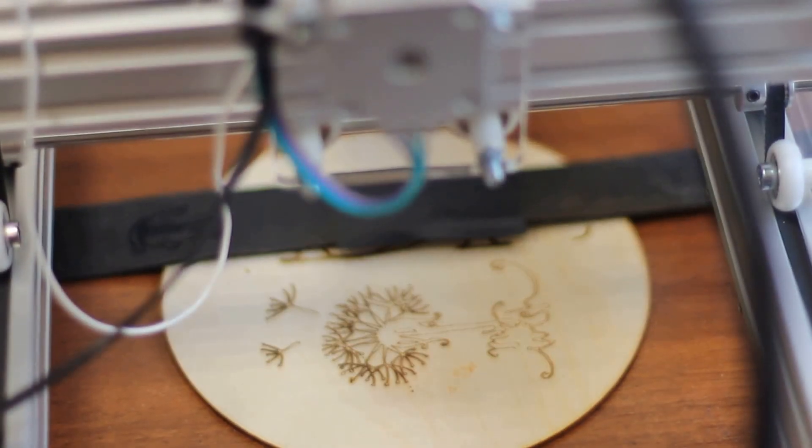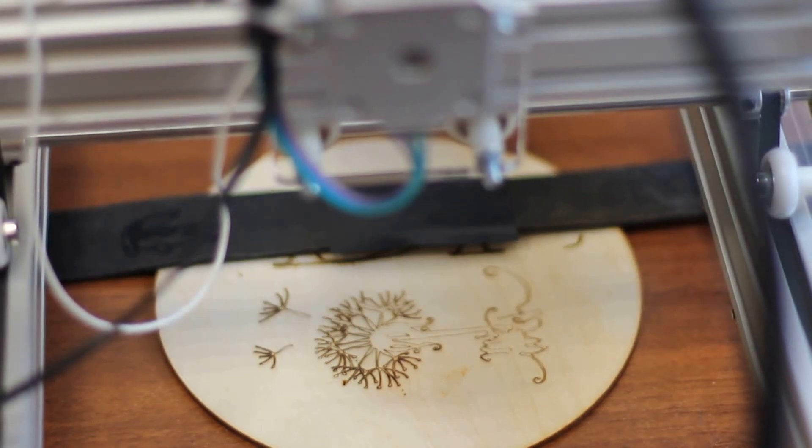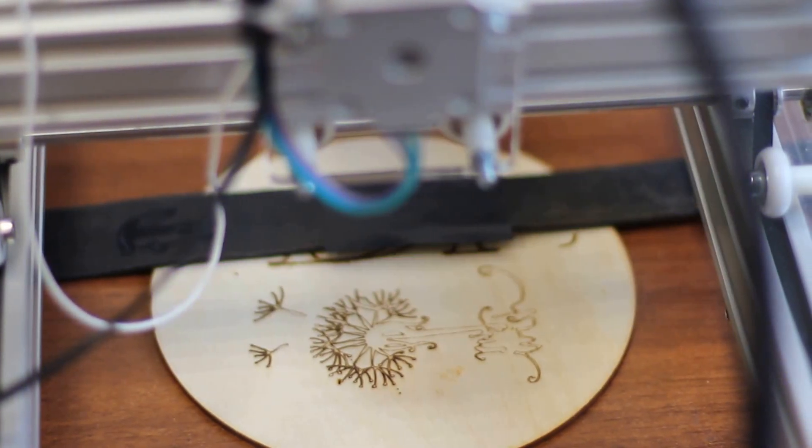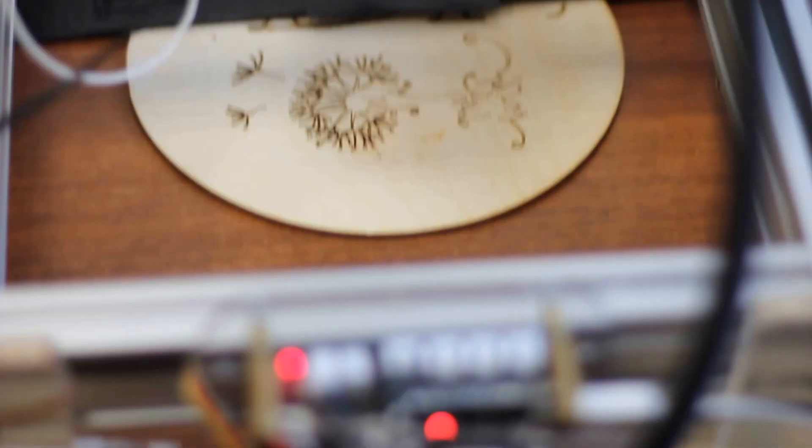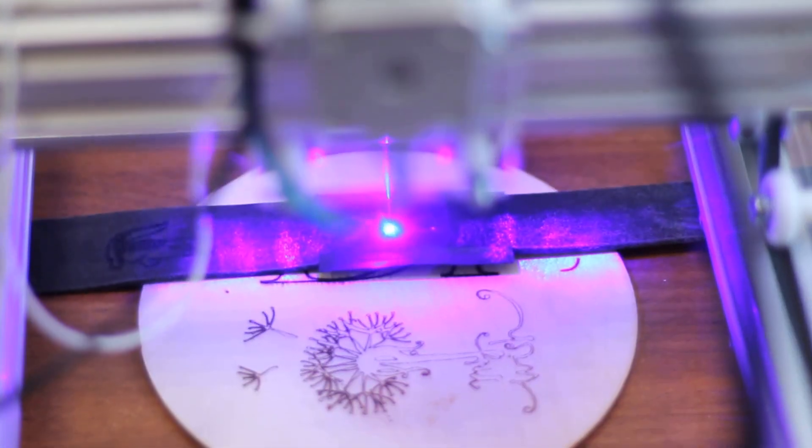Now we just want to make sure that we have the right position of our laser. Let's start. This is our DIY engraving machine and our 8-watt laser.